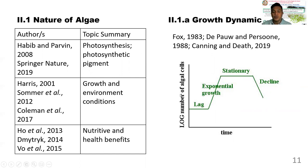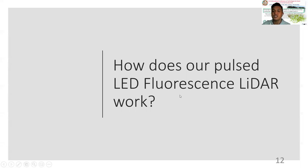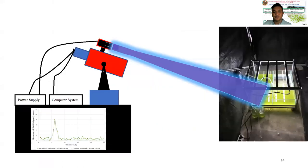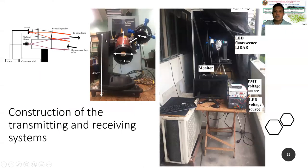How does our Pulse LED fluorescence LiDAR work? The design is divided into the transmitting and receiving systems, which form a biaxial system. We measured the initial optical parameters and used them to measure the fluorescence echo signal from the Chlamydomonas. This is the actual tank used for monitoring, and this is a schematic diagram of the system. The LED LiDAR system consists of a PMT voltage source, an LD source, and a monitor to determine the signal coming from the algae.